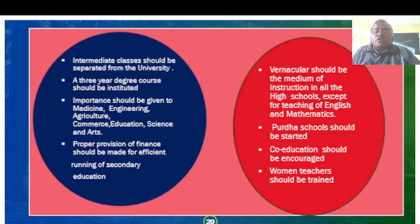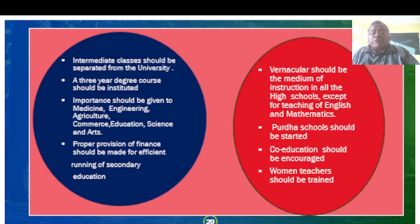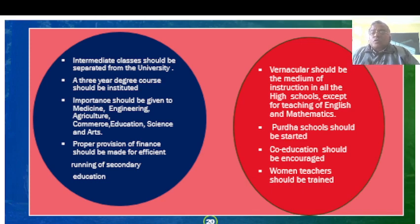Recommendations of the Calcutta University Commission: intermediate courses should be separated from the university; a 3-year degree course should be instituted; importance should be given to medicine, engineering, agriculture, commerce, education, science, and arts; proper provision of finance should be made for efficient running of secondary education; vernacular should be the medium of instruction in all high schools except for teaching English and Mathematics; Madrasa schools for Muslim education should be started; co-education should be encouraged; and women teachers should be trained.